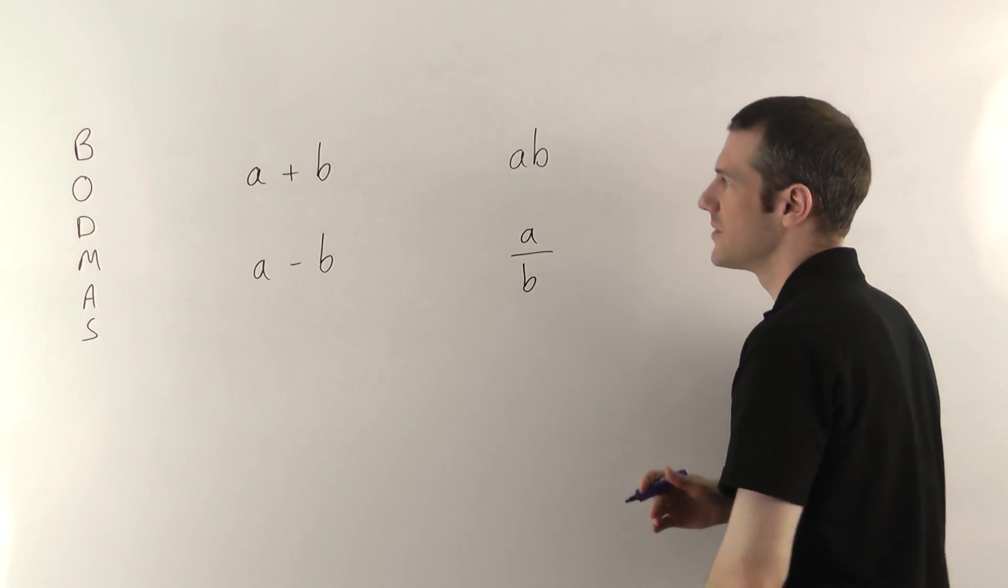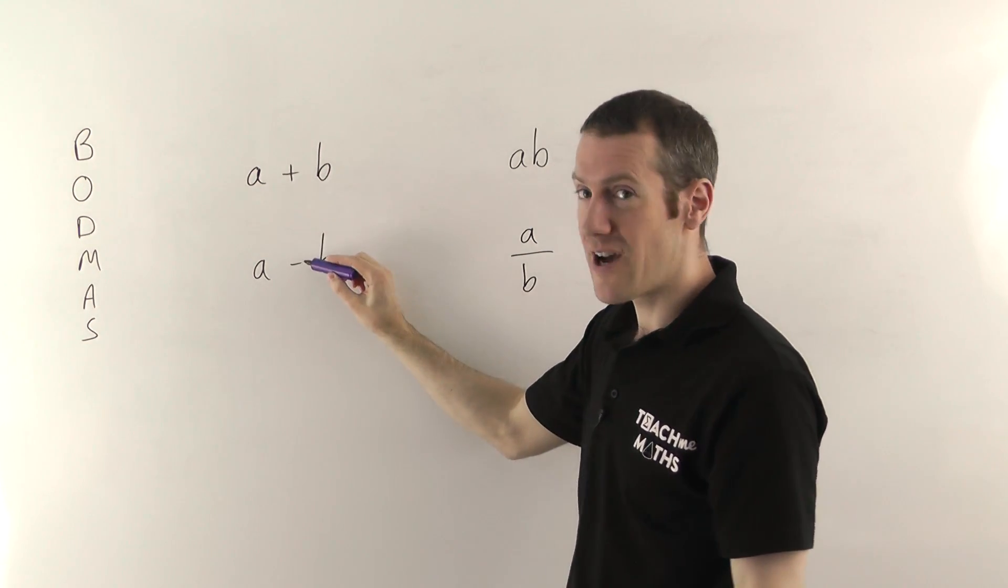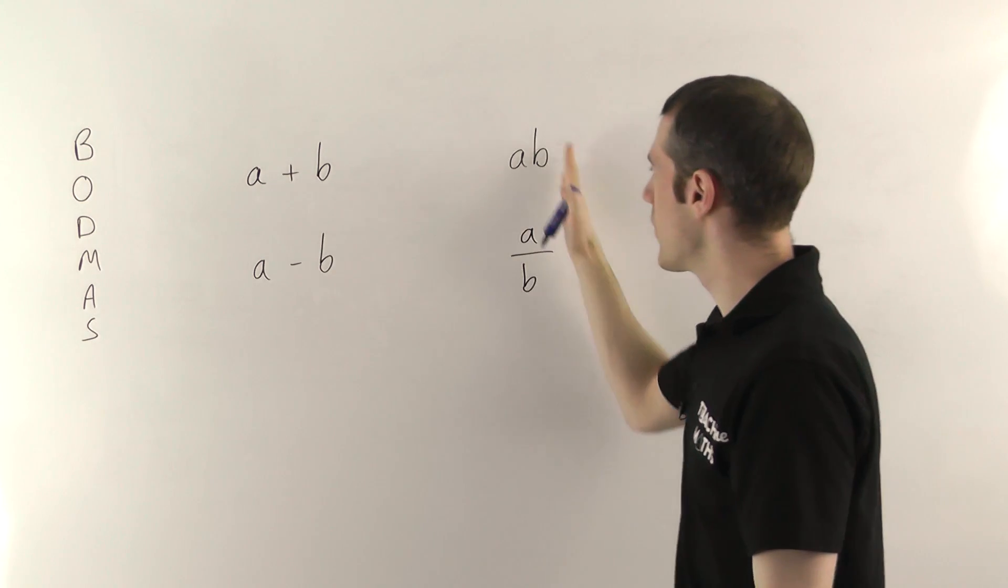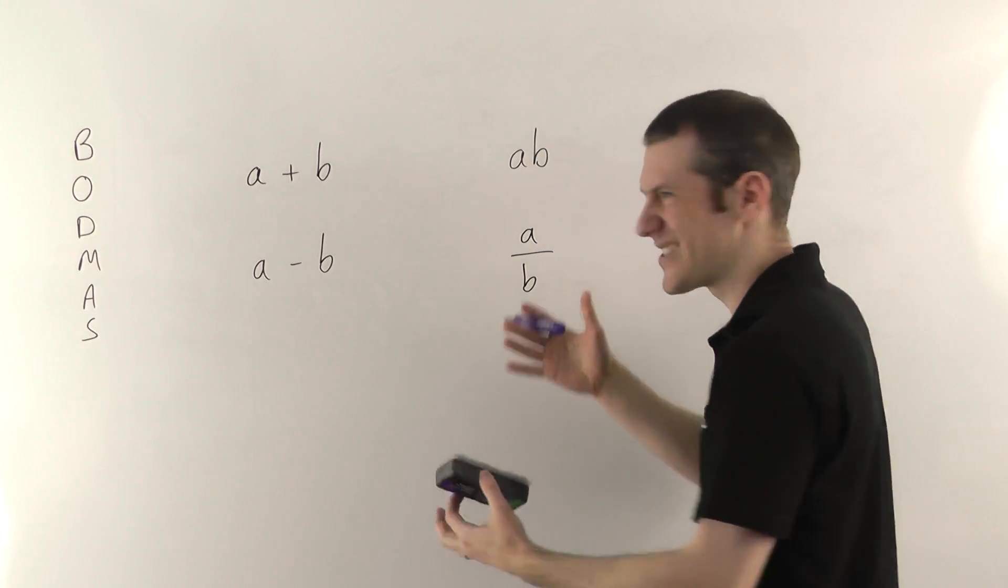So let me give you a couple of examples. But the important thing to realize is you need to spot your adding and subtracting signs wherever you see them, because they're going to kind of separate things out. Whereas these things, you can treat as one blob. They all stick together. So let me show you.